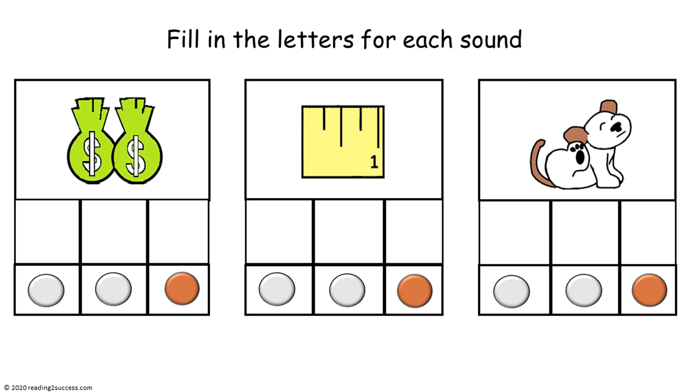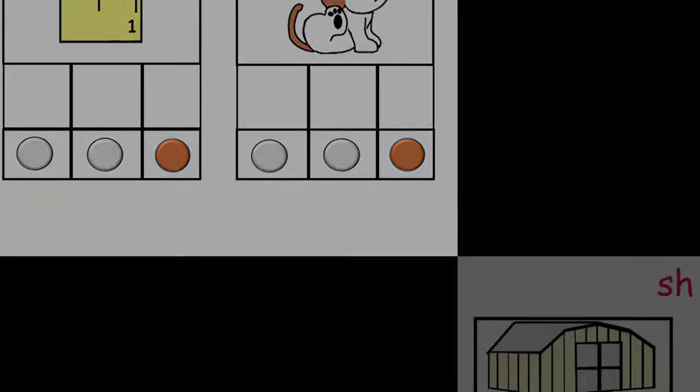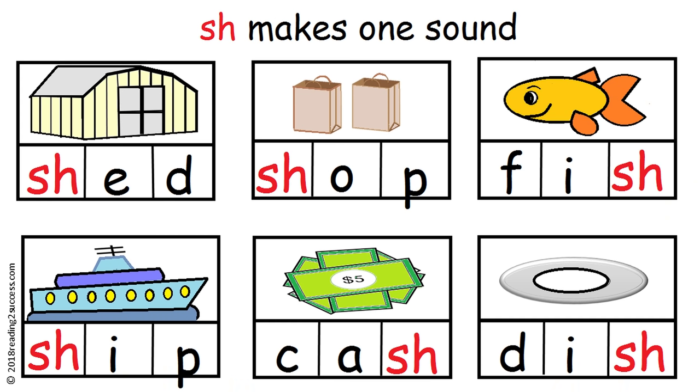When kids are ready, introduce them to SH, two letters that make one sound. So let's look at words that begin with the SH sound: shed, ship, shop, and words that end in SH: cash, fish, and dish.